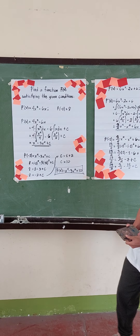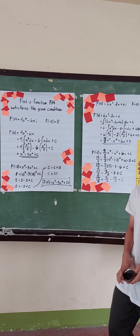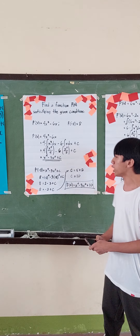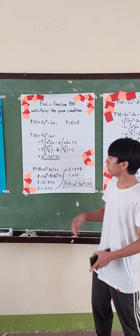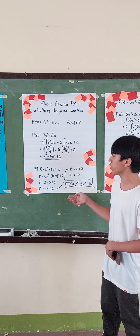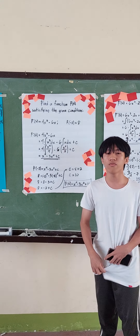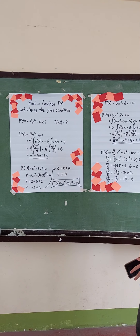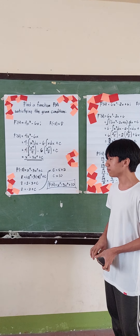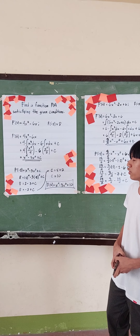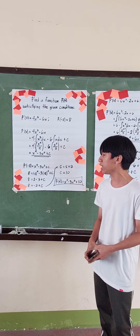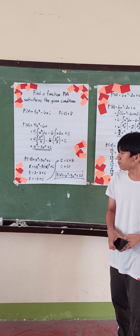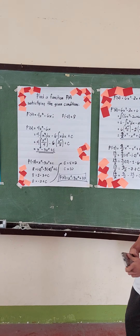Now let's substitute f of negative 1 is equal to 8. So f of negative 1 equals negative 1 raised to the 4th minus 3 times negative 1 squared plus c. So we have 8 is equal to 1 minus 3 plus c. And 1 minus 3 is equal to negative 2. So 8 is equal to negative 2 plus c.